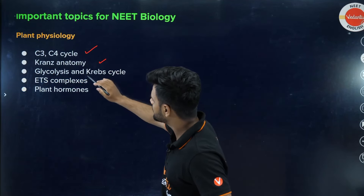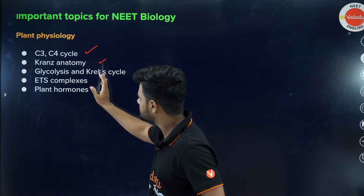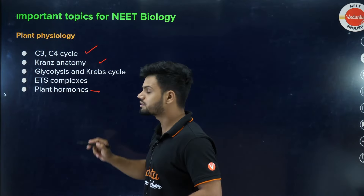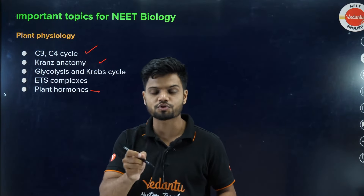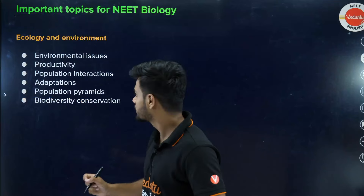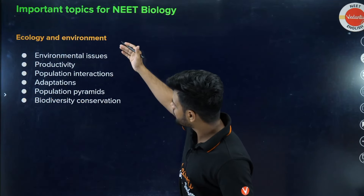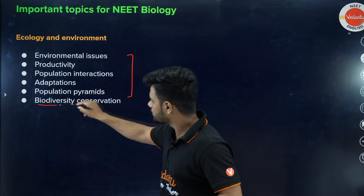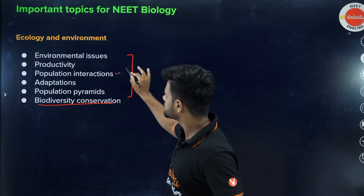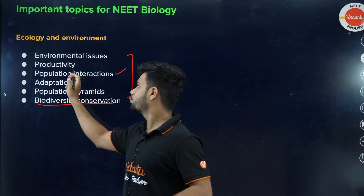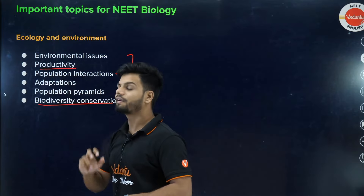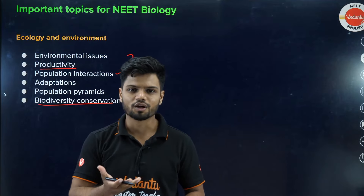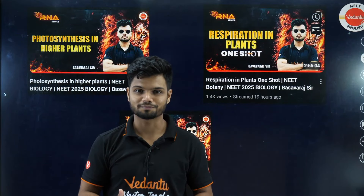In Prophase I, cover leptotene, zygotene, pachytene, diplotene, and diakinesis — always one question. In Plant Physiology, cover the C3 cycle, C4 cycle, Kranz anatomy, glycolysis, Krebs cycle, and electron transport system. Plant hormones — especially auxins and gibberellins — always give one question. In Ecology, many questions come from Biodiversity and Conservation, Population Interaction, and Productivity.